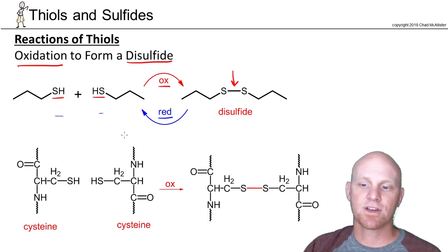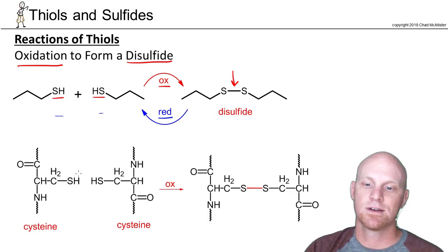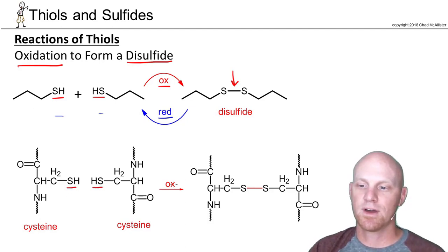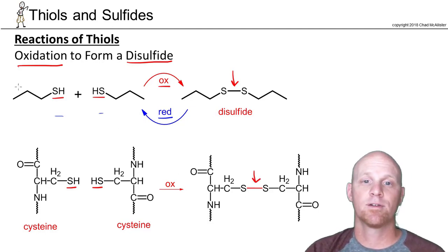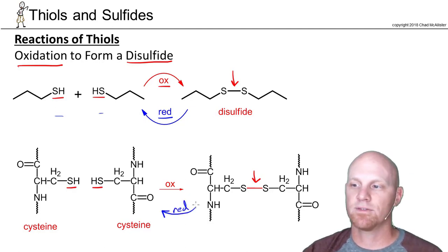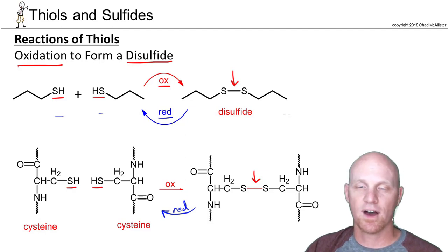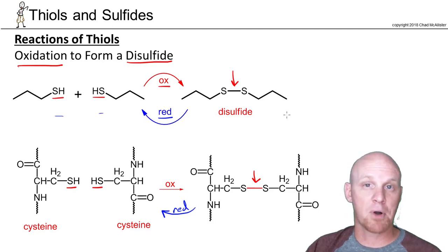This has some biological relevance. Cysteine has a sulfhydryl group, and under oxidizing conditions you can form a disulfide bridge. Under reducing conditions you can break it apart. This has relevance in many biological contexts — we use it in biochemistry quite frequently. Also, if you've ever gotten a perm in your hair — I get them all the time — this is relevant there too.